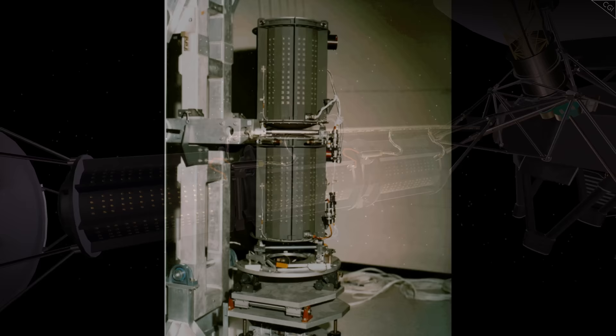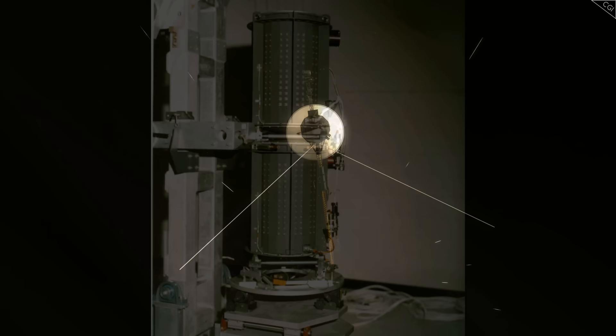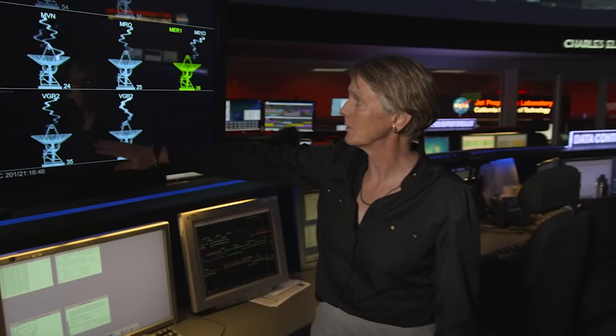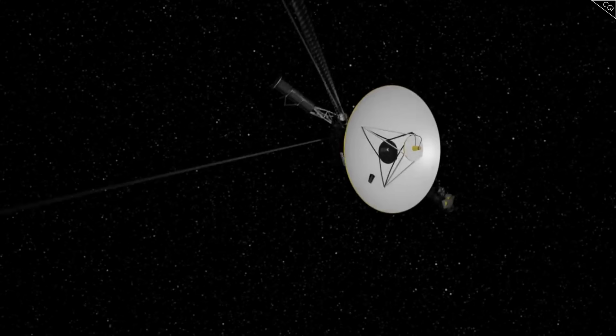You check the other systems. Voyager 1's power supplies are a little low, but that's to be expected. The plutonium oxide that fills its 3 generators have a half-life of 87 years, but Voyager 1 has been traveling for 45 now. It's no wonder the efficiency has started to decline.